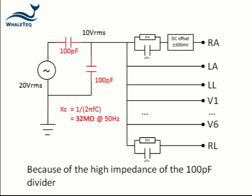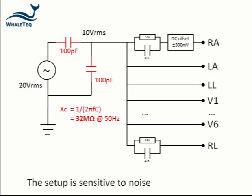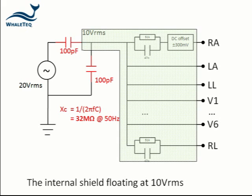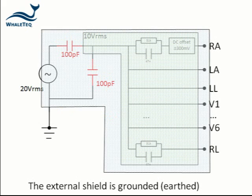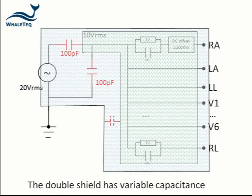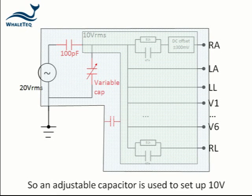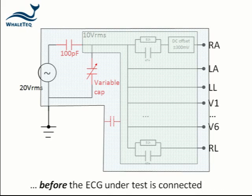Because of the high impedance of the 100 pF divider, the test setup is very sensitive to external noise. For this reason, the standard requires a double shield construction, with the internal shield floating at the common mode voltage of 10 volts, and the external shield grounded. The double shield has a variable capacitance, so an adjustable capacitor is used to set up the 10 volts RMS before the equipment under test is connected.